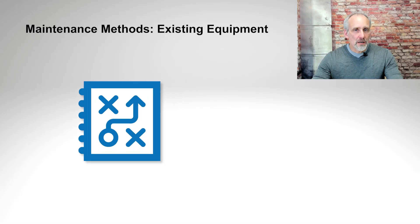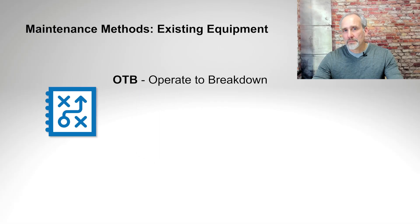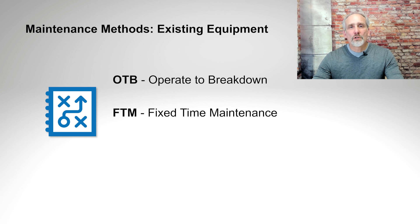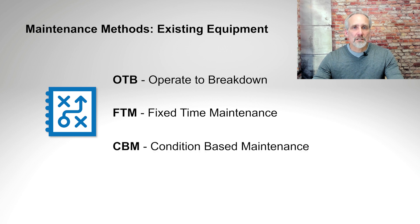We need to decide which maintenance method we're going to use. We have three choices for existing equipment. They are operator breakdown; we can do fixed time maintenance, meaning we can replace the component on a fixed time frequency; or we can do condition-based maintenance, meaning we look at the condition and when something's looking bad, we basically change it out at that point.